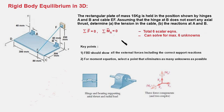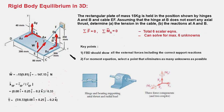Since there are six scalar equations, we can solve at most six unknowns. Before writing down the equilibrium equations and doing the math, one should always check that the number of unknowns does not exceed six. The first step in solving equilibrium problems is to draw the free body diagram.